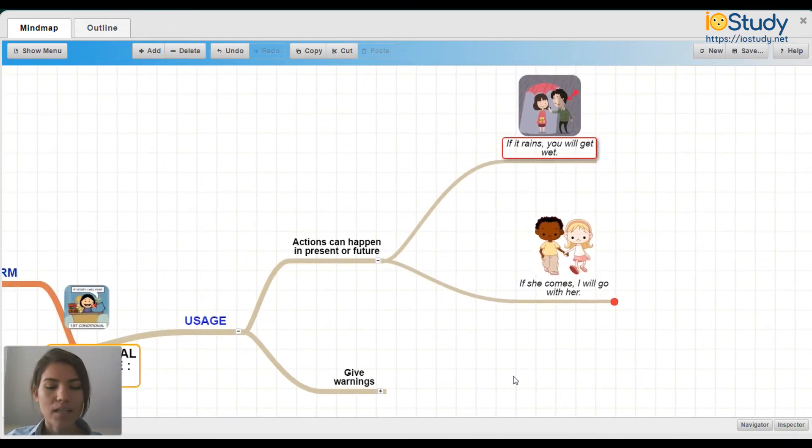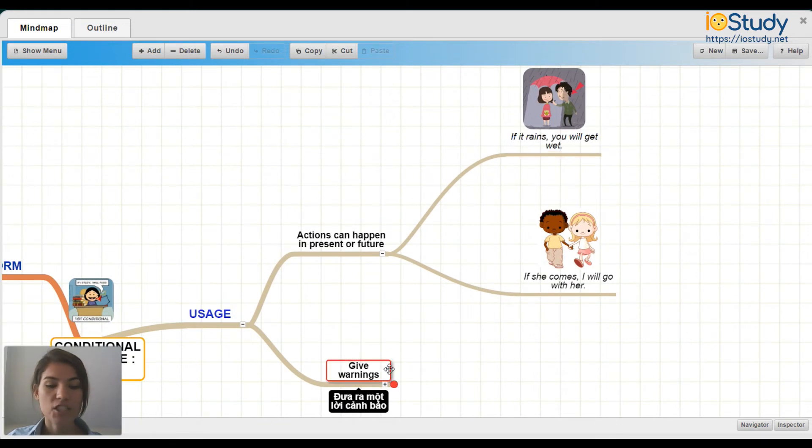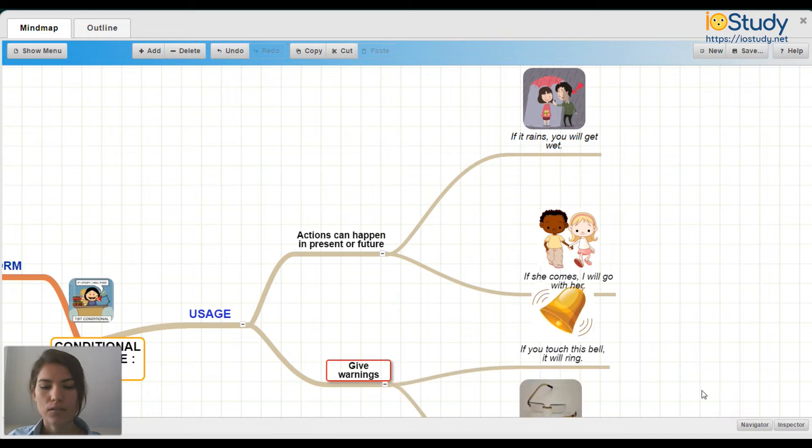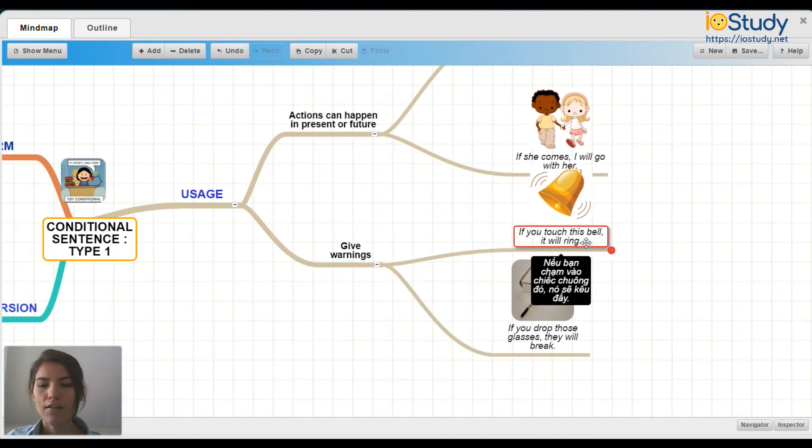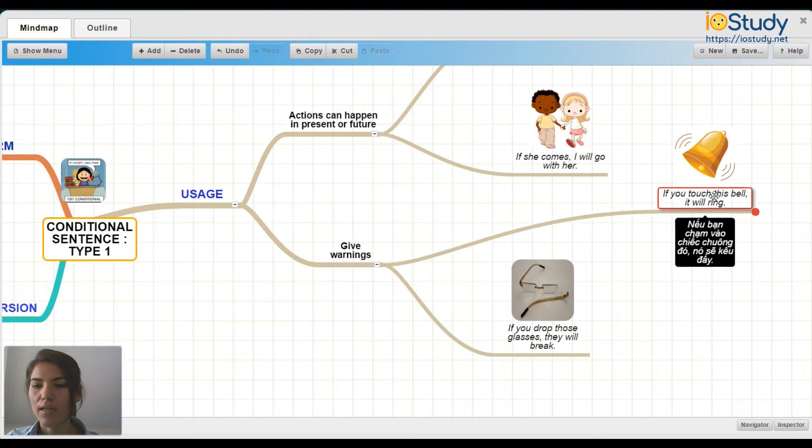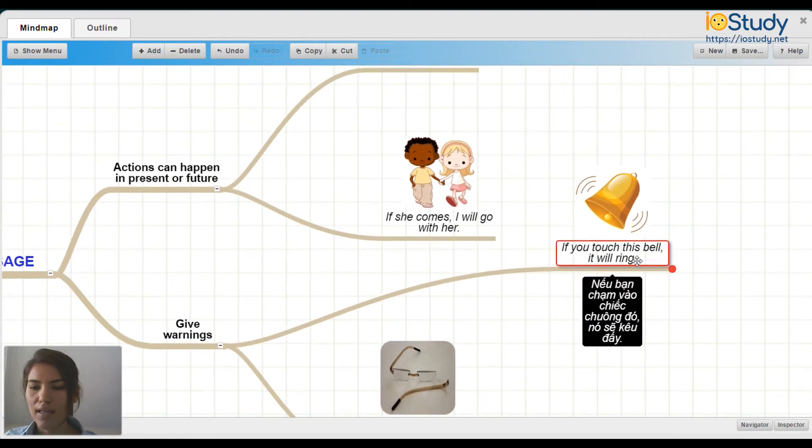Now we can talk about the conditional while we give warnings. So let's expand this. First example of giving a warning. If you touch this bell, it will ring. So this is a warning telling you what will happen if you touch the bell.